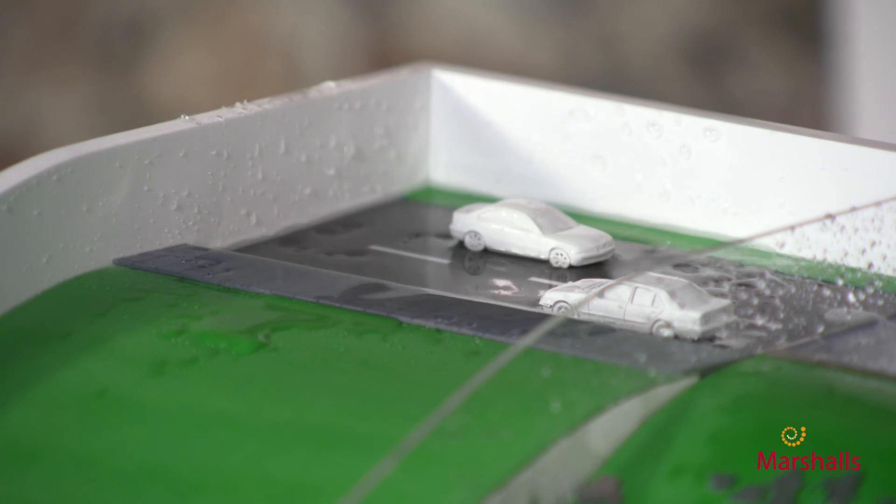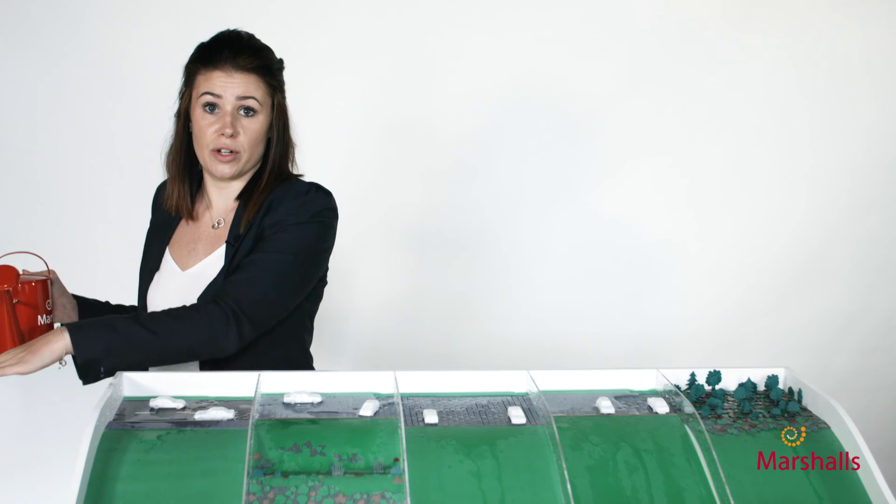So as you can see, as it rains the water is collected in the drainage system and transported away rather than downstream. So this is a demonstration of three sustainable drainage systems which stop flooding downstream.